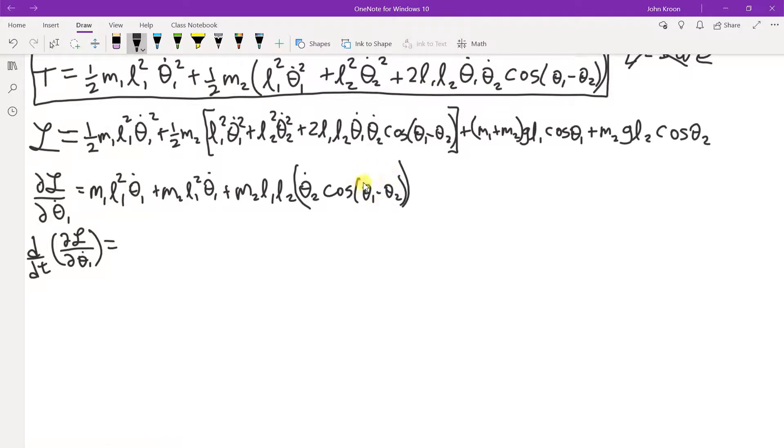And when you do all that, you get M1 plus M2 L1 squared theta 1 double dot, plus M2 L1 L2 theta 2 double dot. So the double dots are the second time derivative.